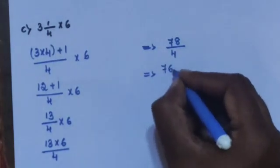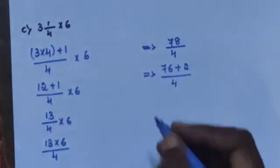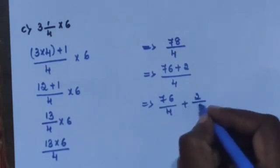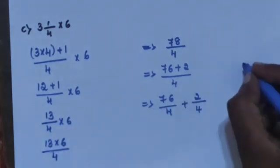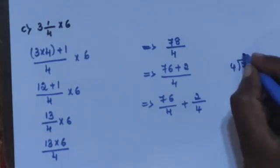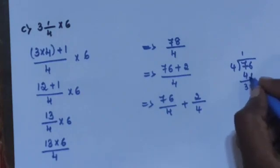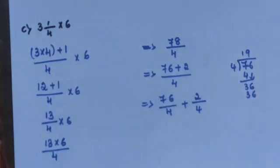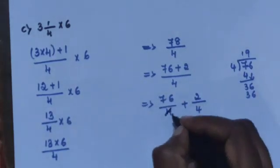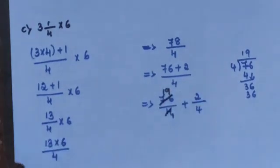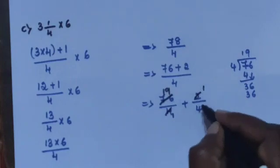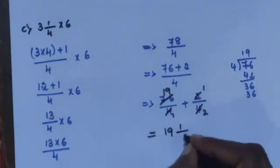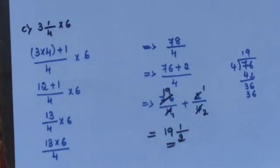Convert 78/4 into a mixed fraction. 78 = 76 + 2, so 76/4 + 2/4. Since 76 ÷ 4 = 19, and 2/4 = 1/2, the final answer is 19½.